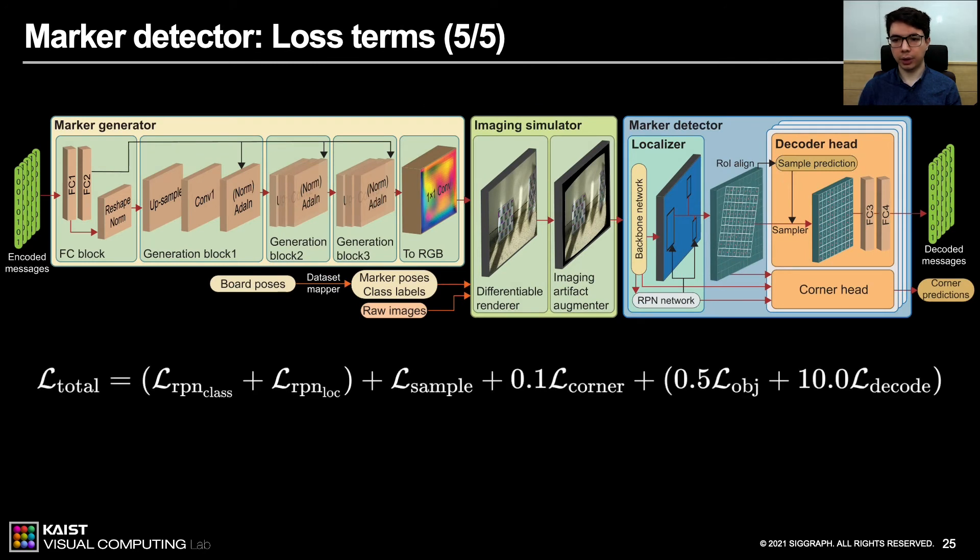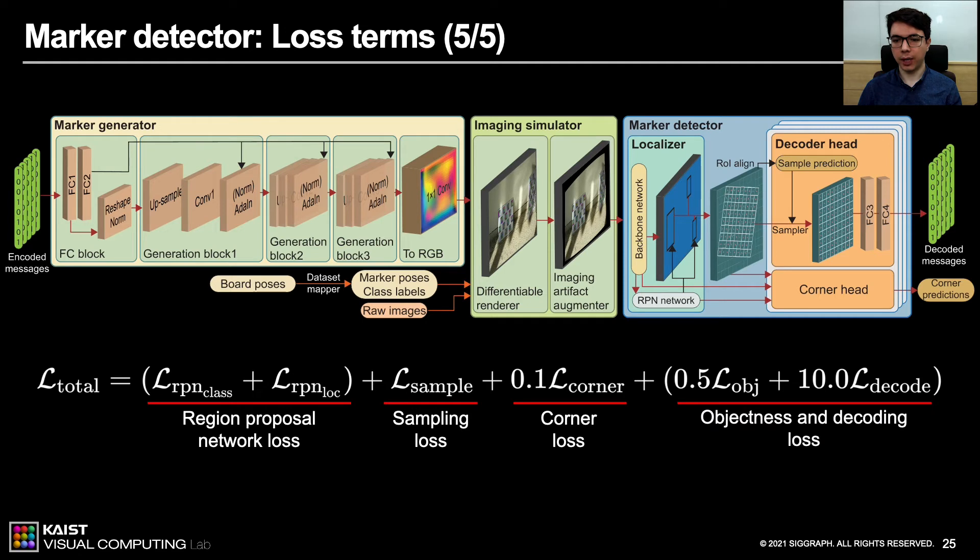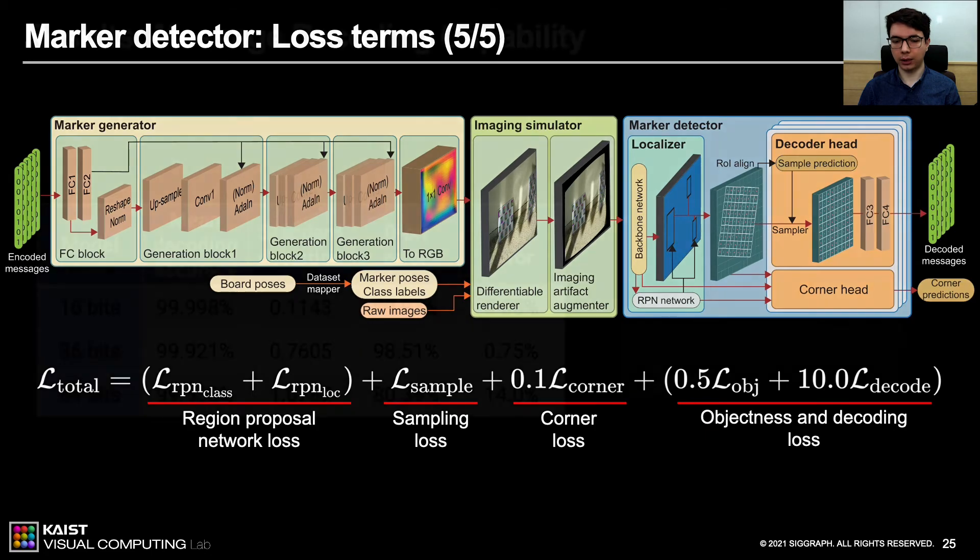Here, we summarized our final loss term for optimizing parameters. First term comes from the region proposal network, predicting the existence of the marker and its bounding boxes. Second term comes from the sampling required for decoding. Third term is the corner prediction loss. And final term is from the decoder head. For each normalized decoding region, we decode the message and predict if it is a valid marker.